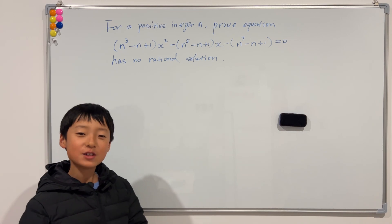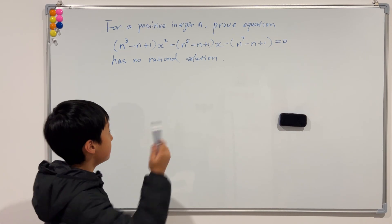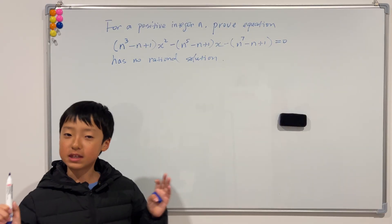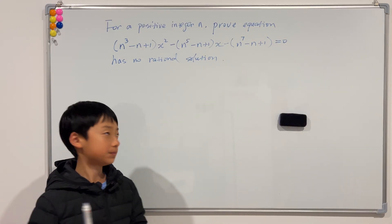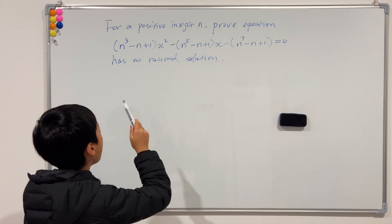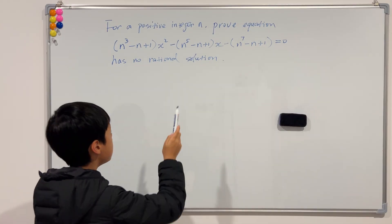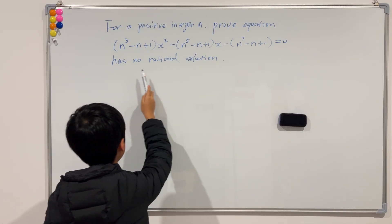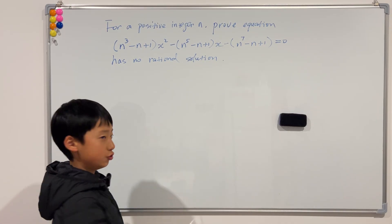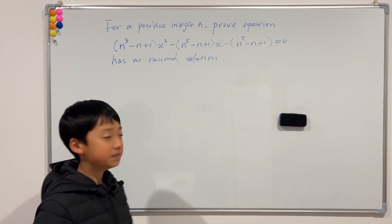Hi guys, welcome back to another video of me teaching, and today I have this question on the board for you guys. Why don't we get into the question. So, this question says that for a positive integer n, prove that this equation has no rational solution. And we're going to prove this using proof by contradiction.